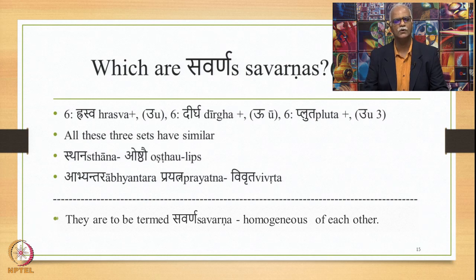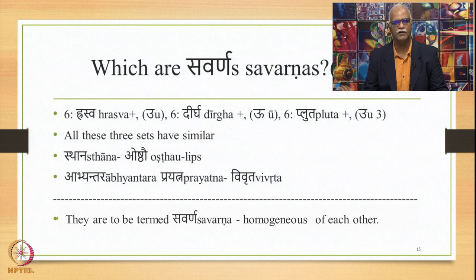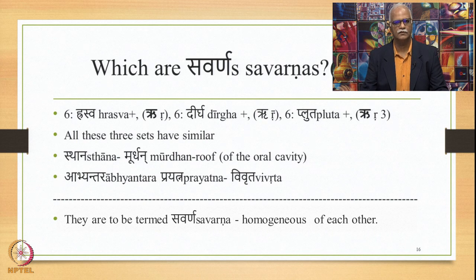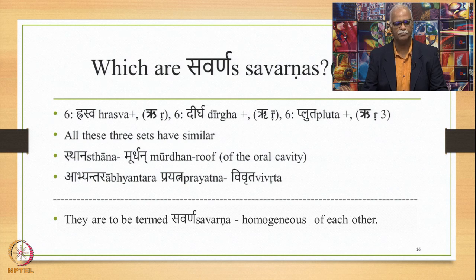Similarly, the 6 Raswa-U, 6 Deerga-U, and 6 Pluta varieties of U all have similar Sthana, namely Oshtav or lips, and similar Abhyantara Prayatna, namely Vivruta — therefore they are termed as Savarna following 1.1.9. For Ru, the 6 Raswa-Ru, 6 Deerga-Ru, and 6 Pluta-Ru all have similar Sthana namely Murdhan, roof of the oral cavity, and similar Abhyantara Prayatna Vivruta — so these 18 sounds are termed Savarna. For Lu, the 6 Raswa and 6 Pluta varieties have similar Sthana Danta and similar Abhyantara Prayatna Vivruta — these 12 varieties are Savarna of each other.